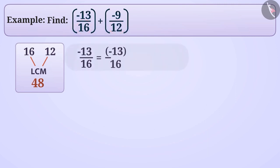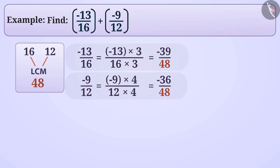If we multiply both the numerator and the denominator of minus 13 by 16 by 3, we will get the rational number minus 39 by 48. Similarly, multiplying both the numerator and the denominator of minus 9 by 12 by 4 will give us the rational number minus 36 by 48.